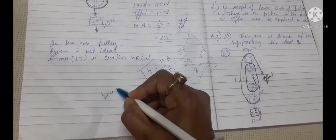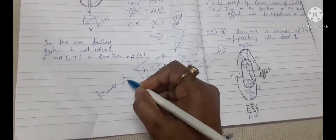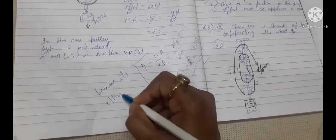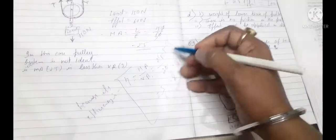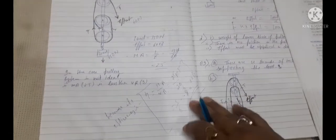...equals to eta, that is 80 percent. It is working only 80 percent, so it is not ideal. If it equals to 100 percent, MA and VR both are equal, it means both cancelled and equals to 1, that is 100 percent.